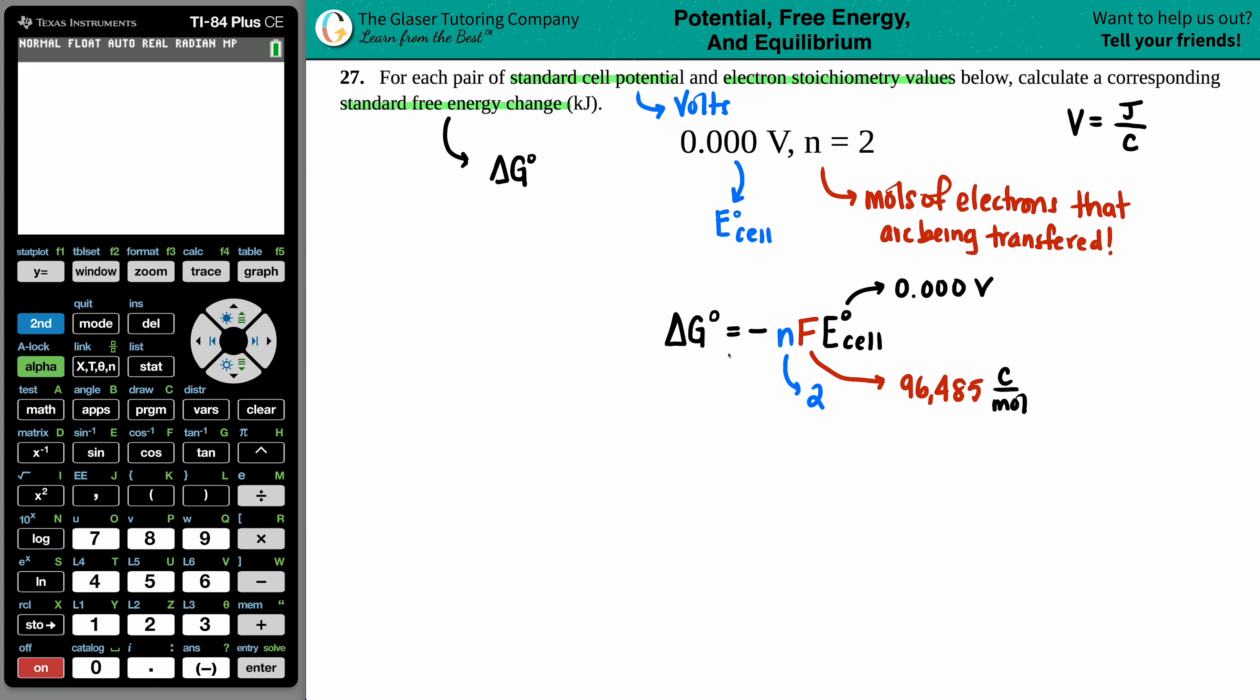So now let's just write it out. ΔG, the free energy change, is going to be equal to the n, the F, and the E cell. So we have two electrons being transferred,